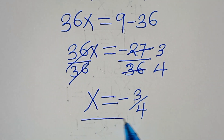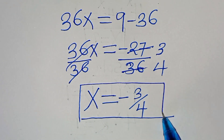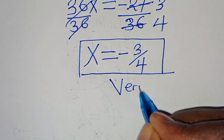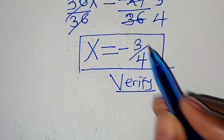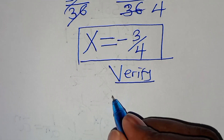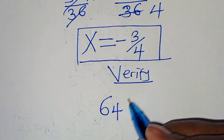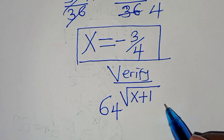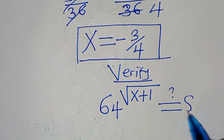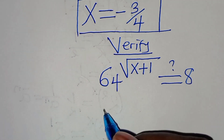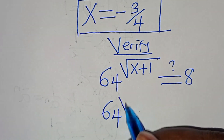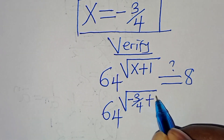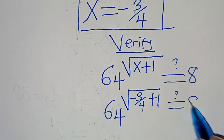So x equals minus 3 over 4 is the value of x. Now the next step is to verify — let's verify if this value of x satisfies the equation. We have 64 to the power of square root of x plus 1, substituting x equals minus 3 over 4, this should give us a value of 8.